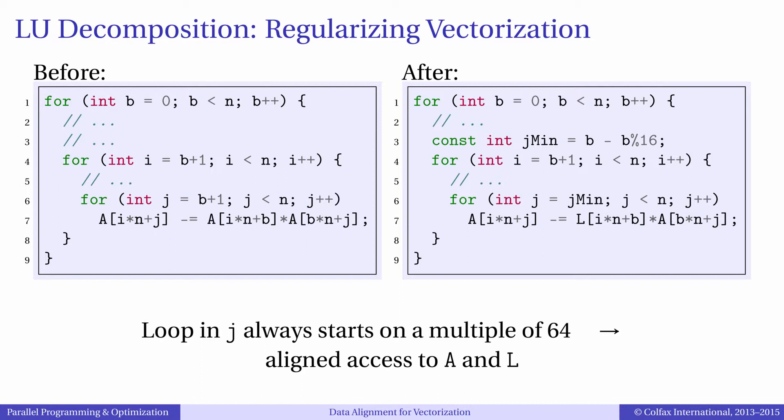Of course, we need to worry about correctness, because the extra iterations will override some of the data computed earlier. To deal with this problem, we introduced an additional storage container, matrix L, which allows us to separate the elements under the main diagonal in a separate array.